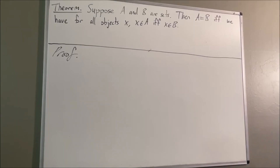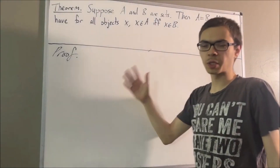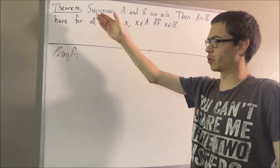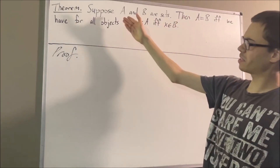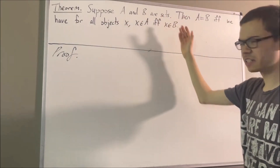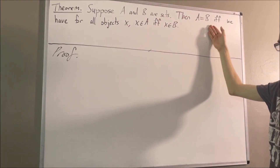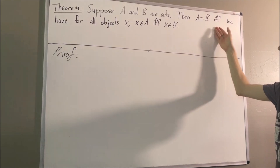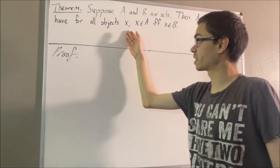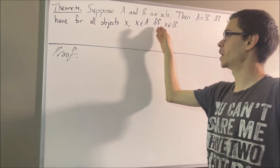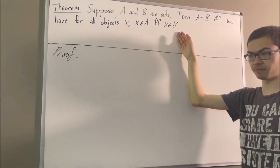Hello! In this video, we are going to prove the following theorem. Suppose A and B are sets. Then A is equal to B if and only if, for all objects X, X is an element of A if and only if X is an element of B.